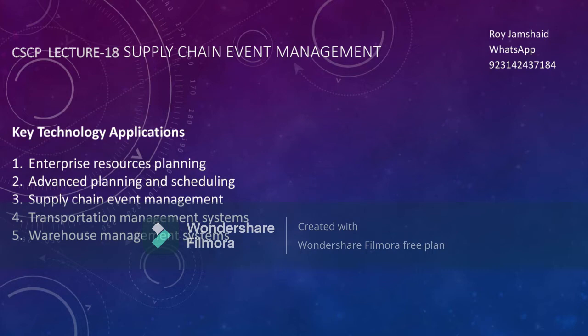Enterprise Resource Planning was covered in previous lectures. Advanced Planning and Scheduling was also covered. Supply Chain Event Management is what we will cover today. Number four, Transport Management System, has already been covered, and Warehouse Management System will be covered in the next lecture.